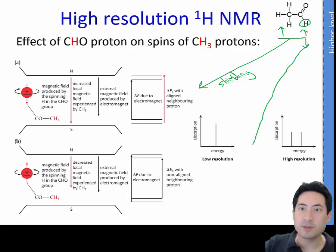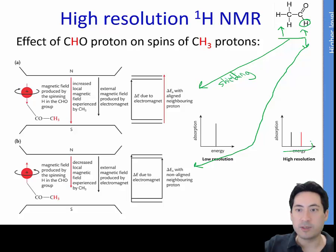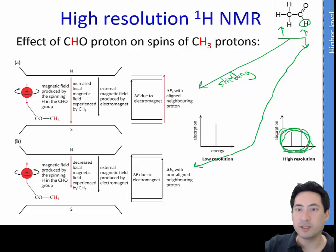When the neighboring proton is spinning downward, that's called deshielding, which decreases the magnetic force on that proton. In high resolution, we're not just going to see one peak — we're going to see two. Because there is one neighboring hydrogen, it's going to cause a two-way split.